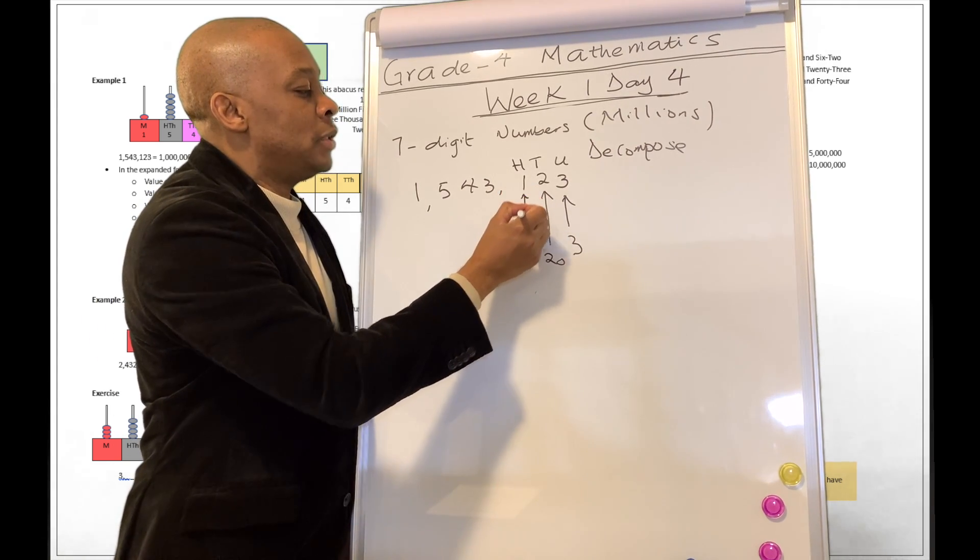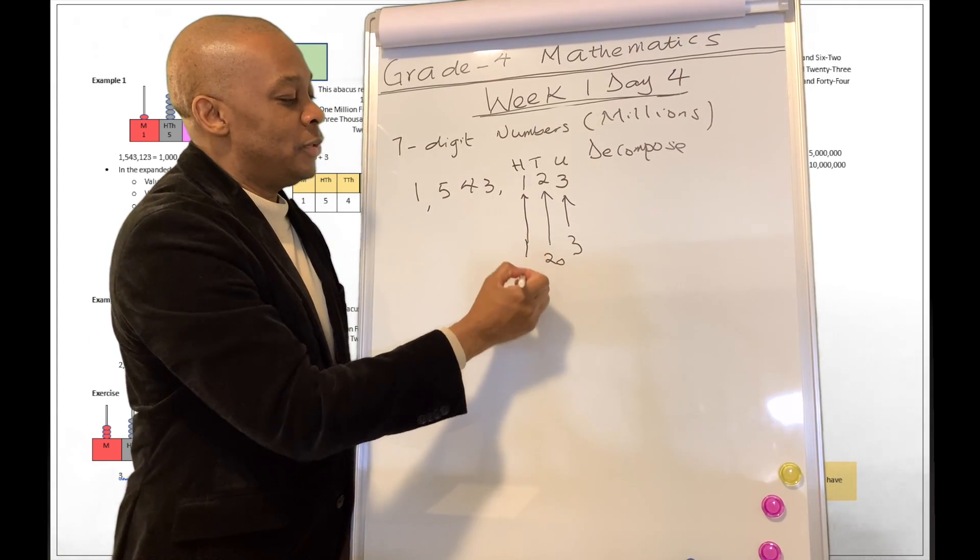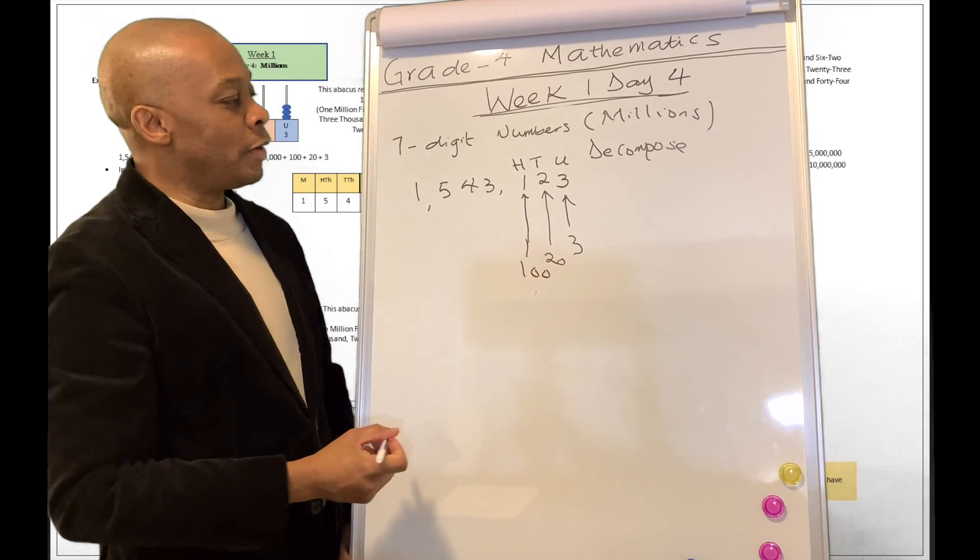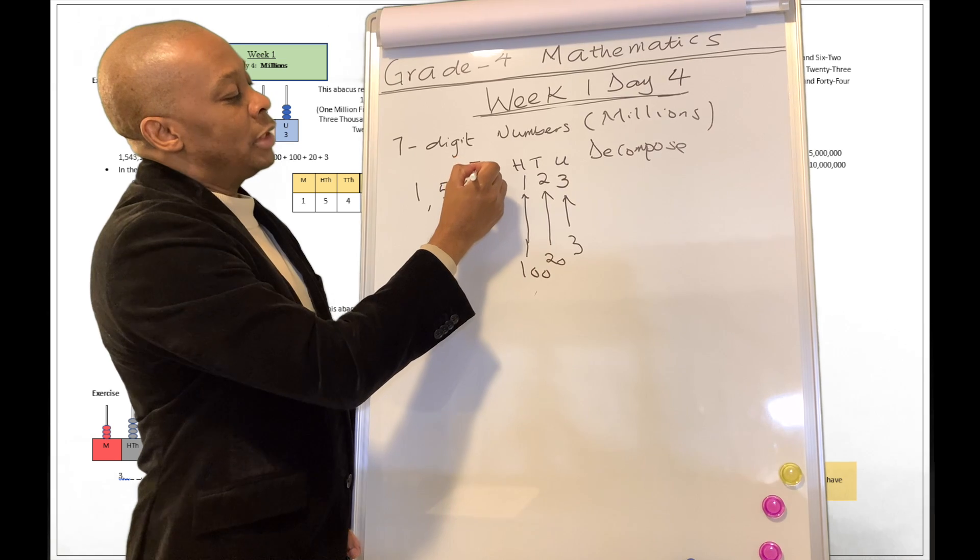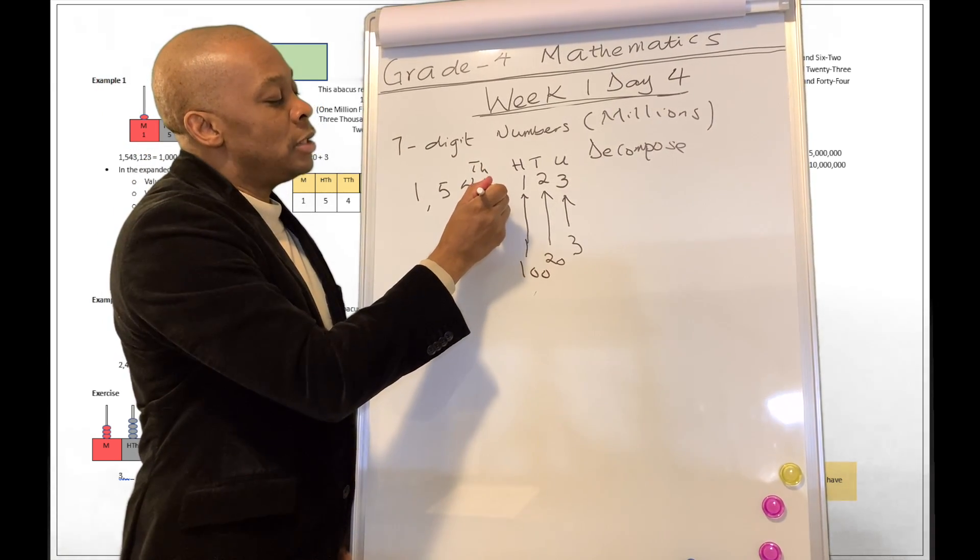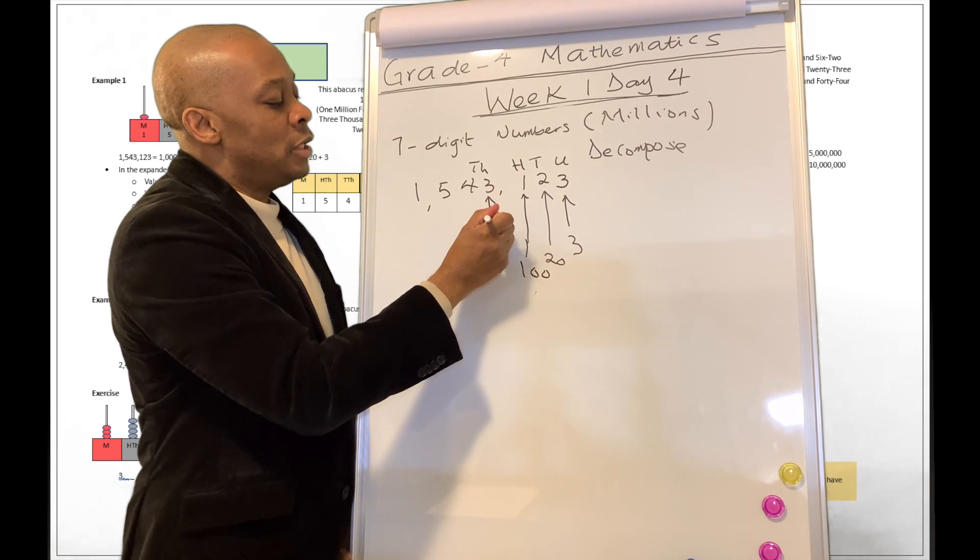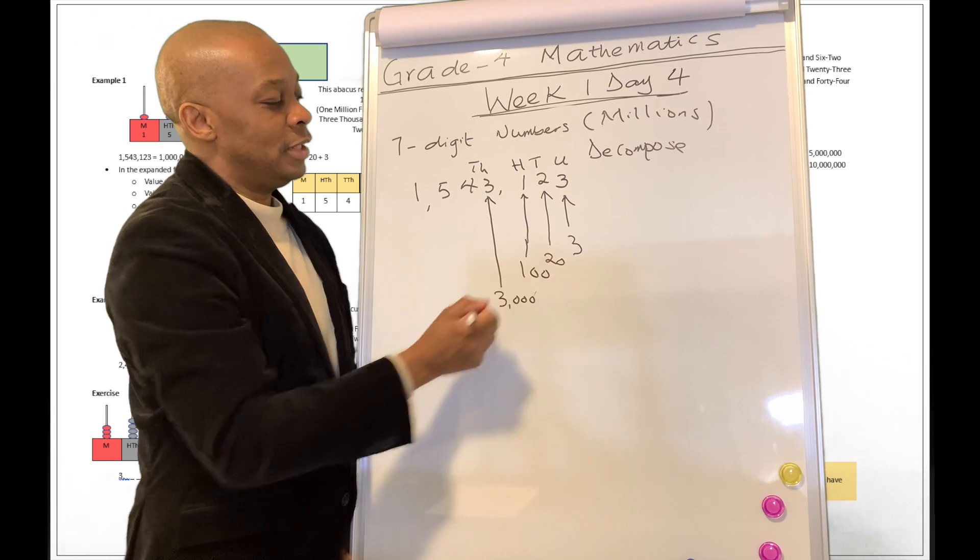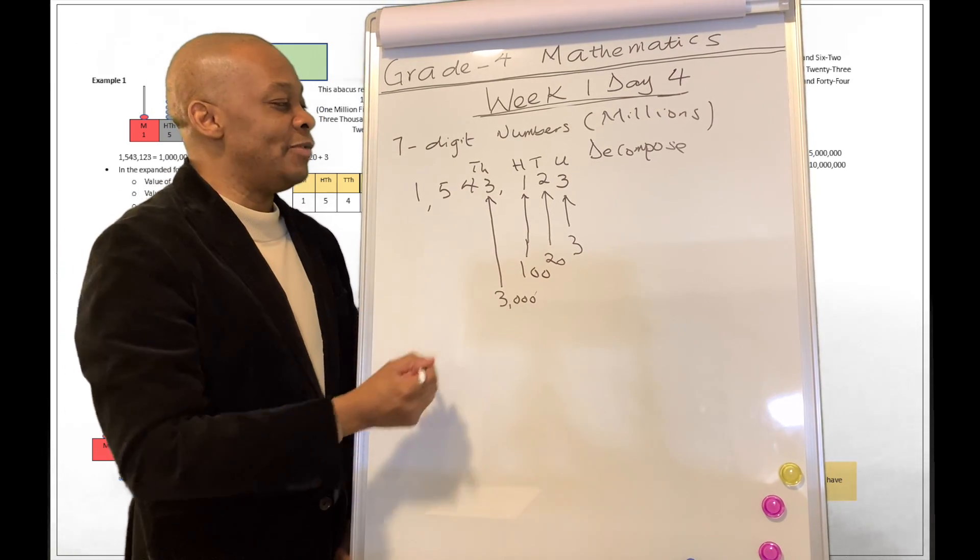What about in this column? This column is the H column. And that's going to be in the 100s column. So this represents 100. What about this column over here? This column is going to be in the 1000s category. And digit number 3 represents 3000. You remember that. I believe you can.